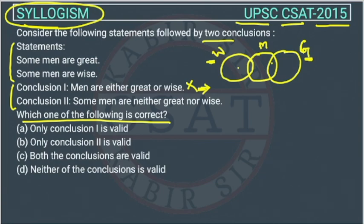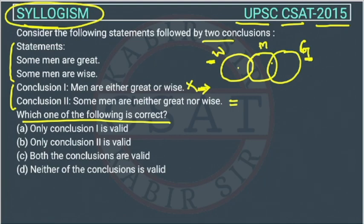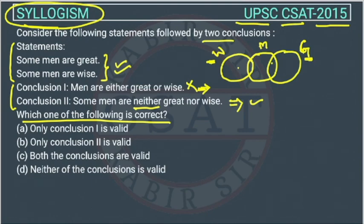Conclusion 2 states: some men are neither great nor wise. This says there are some men who are not great and not wise. This is a possibility, but we cannot be sure about it — it is not definite. Additionally, the given statements are positive affirmative statements, so we cannot draw a negative conclusion from them. This conclusion uses 'neither,' making it a negative conclusion, so it is also wrong.